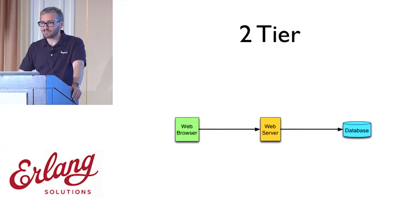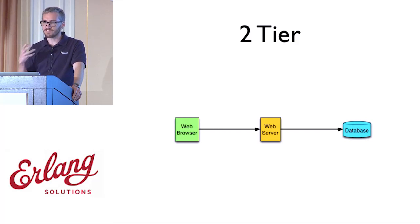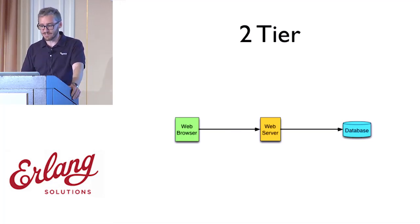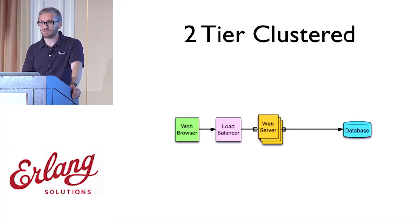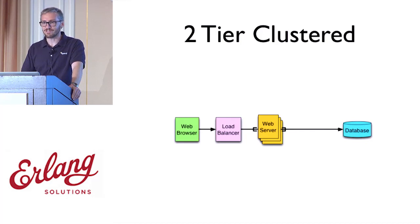A little bit later, people decided they wanted to do more than just serve up static pages, so they started to integrate databases and serve up more dynamic content. This is what I consider to be the first distributed systems you would be running in your facility. Some people might still call them client-server systems, but in reality you've got two machines that can fail instead of one. And if you were really lucky at that time, you might have high traffic and suddenly need more than one web server.